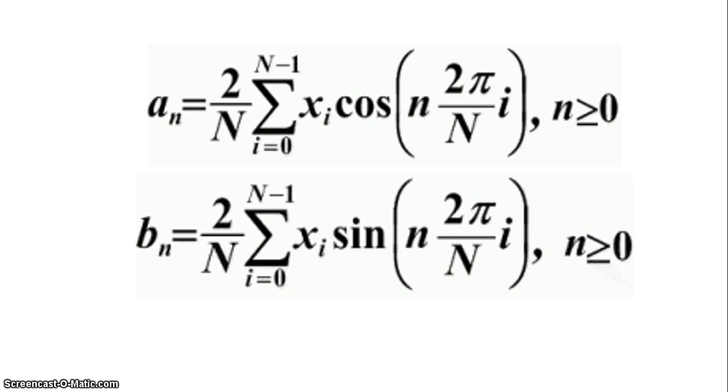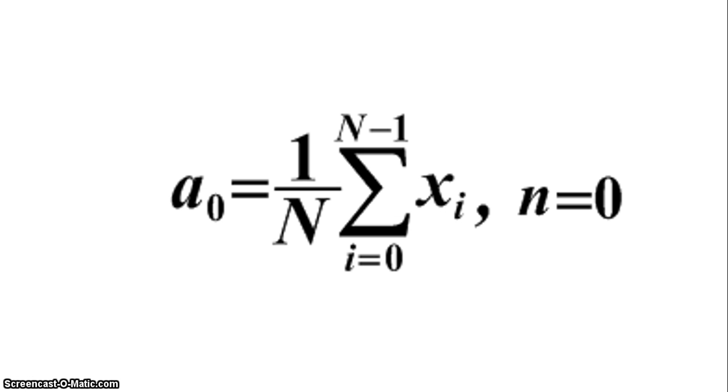DFT DC cosine coefficient is just an average value. Discrete Fourier transform coefficients can be used for signal compression, signal processing in frequency domain, and signal interpolation.